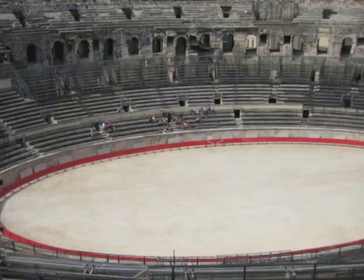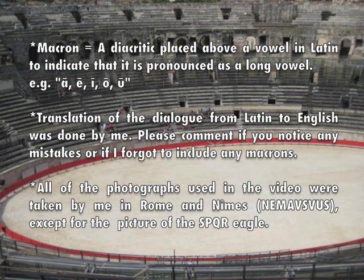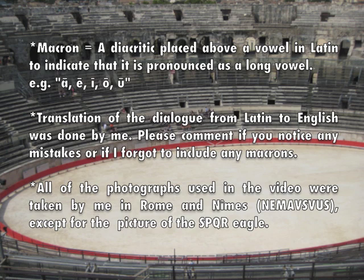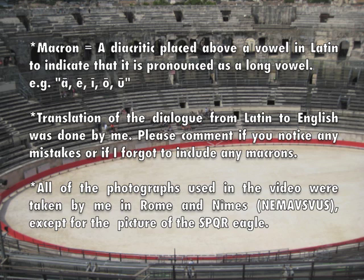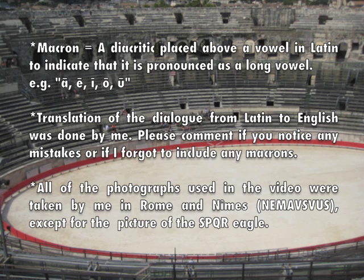An important aspect in learning Latin is the use of macrons. A macron is a diacritic placed above a vowel to indicate that it is pronounced as a long vowel. The name macron comes from Greek makron, meaning 'long.' The vowels in Latin written with a macron would be pronounced as ā, ē, ō, ū. The Romans did not use macrons to write their language, but they are now used to teach new learners of Latin the proper pronunciation when reading.